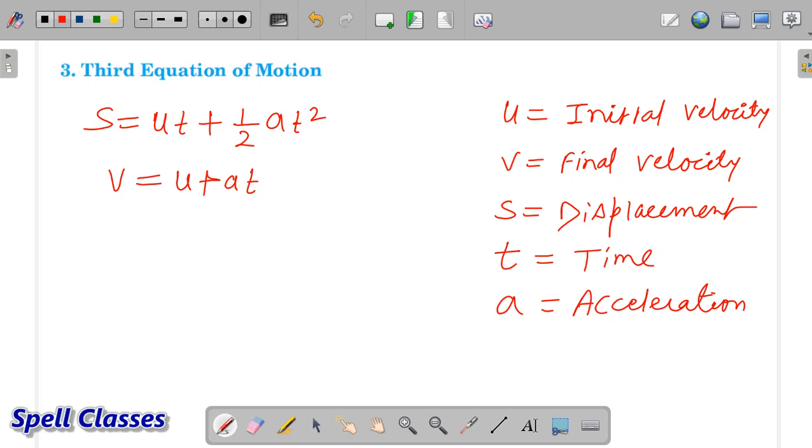First of all, from the first equation, we'll find the value of t. From the first equation, we find t equals v minus u upon a.